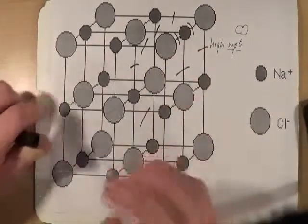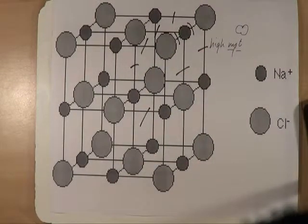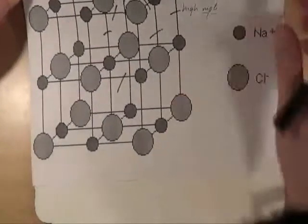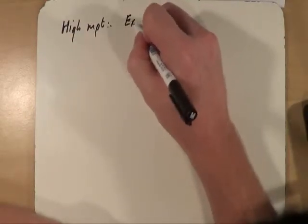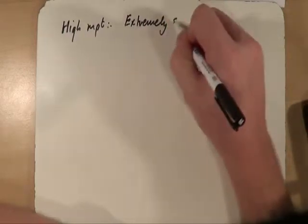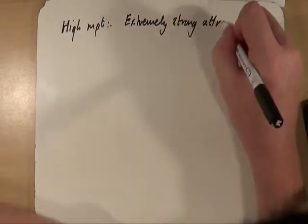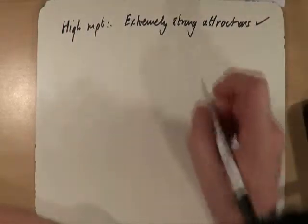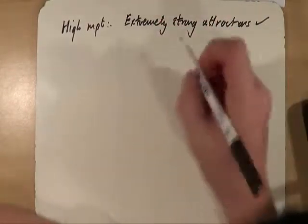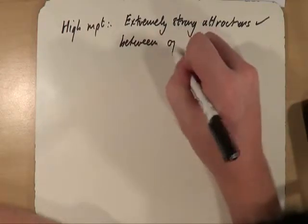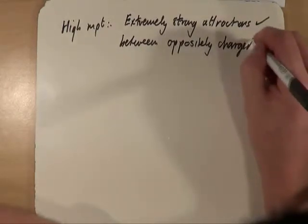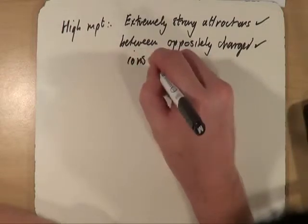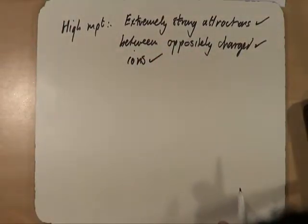To melt it, remember your kinetic theory back in Key Stage 3, you have to have particles which are free to move. So in other words, if I melt this thing, I can have particles which are free to move. But that requires huge amounts of energy. So why does it have a high melting point? Well, that is because of extremely strong attractions between oppositely charged ions.